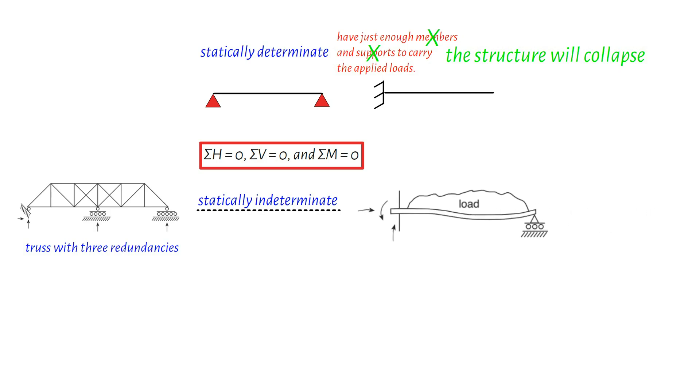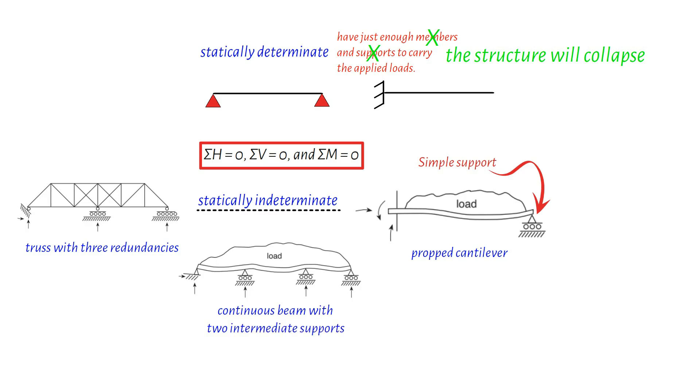First, we have the propped cantilever beam. It features a simple support at the end, adding one redundancy to the structure. Another example is the continuous beam, which has additional supports, resulting in two redundancies. Even slight settlements of these supports can alter the distribution of bending moments and shear forces.